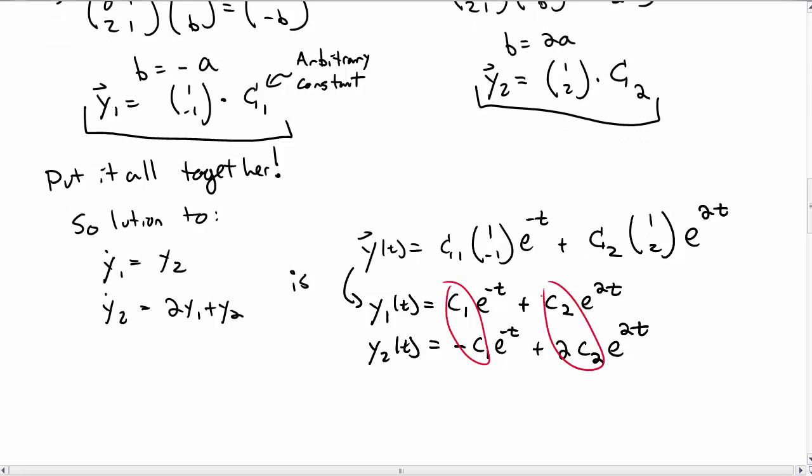Now I want to point out that there's two arbitrary constants here, c1 and c2, which are coupled between the two solutions. And we have two unknown constants because we have two first-order differential equations that we started with. So that's the basic technique for solving differential equations with matrices. And we'll see you in another video.